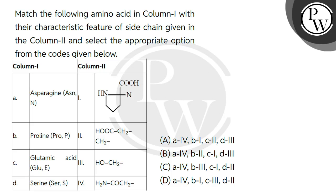Hello students, let's see this question. The question says match the following amino acids in column first with their characteristic feature of side chain given in column two and select the appropriate option from the codes given below. So you have four options given in the left column one.